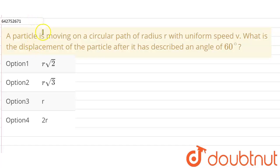Hello everyone. So our question is, a particle is moving on a circular path of radius r with uniform speed v. What is the displacement of the particle after it has described an angle of 60 degrees?